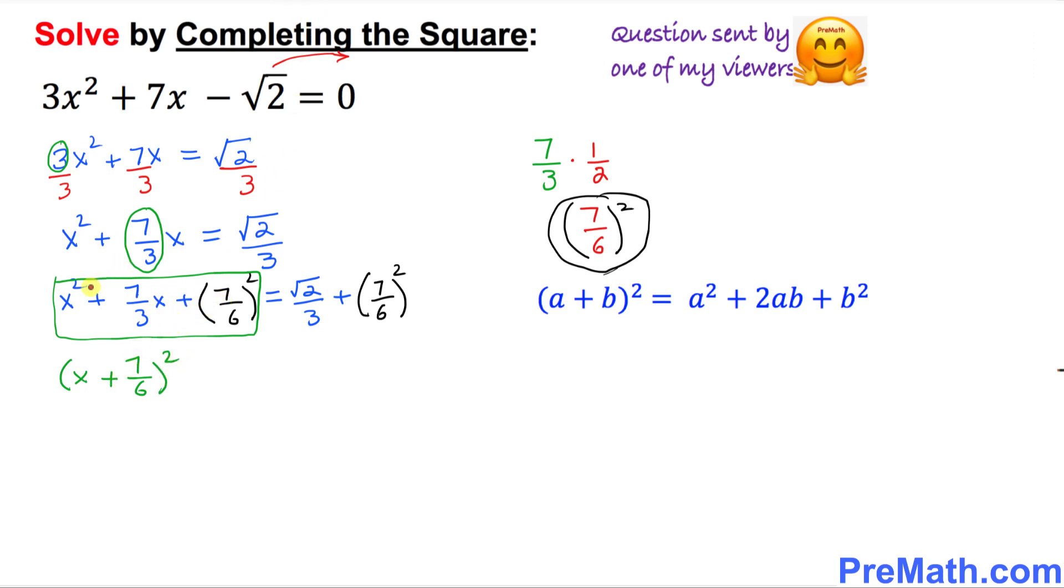Once again, make sure that this x showed up right here, 7/6 showed up right here, and this positive sign is in the middle and we simply disregard the middle part. This equals √2/3 + 49/36 right up here.